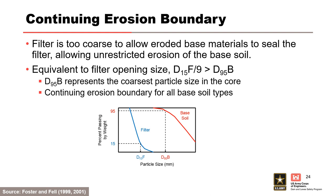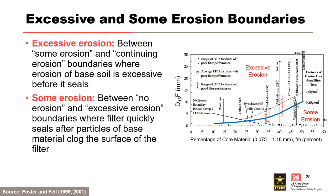The excessive erosion and some erosion boundaries were estimated based on a comparison of laboratory filter tests to case history data of poor filter performance, which showed progressive sealing of the filter zone. The excessive erosion boundary occurs between the some erosion and continuing erosion boundaries, where erosion of base soil is excessive before it seals. Filters will eventually seal, but only after significant erosion of the base soil, and there may be large leakage flows before the filter seals. The some erosion boundary occurs between the no erosion and excessive erosion boundaries, where the filter quickly seals after particles of the base material clog the surface of the filter.